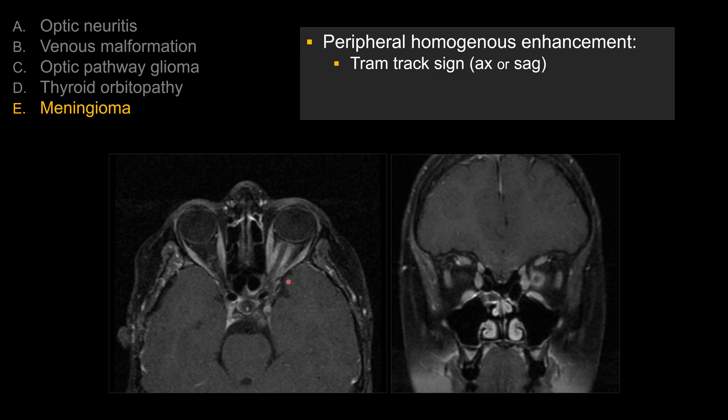First of all, you do see abnormal enhancement surrounding the left optic nerve. When I see an orbital lesion, one of the first things I do is determine the lesion's relationship to the optic nerve — does it arise from the optic nerve itself or from outside it? It's the same approach I use with brain lesions: is it intraaxial or extraaxial? And with spinal lesions: is it intramedullary or extramedullary?